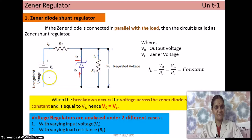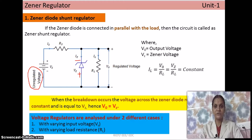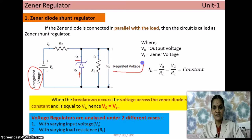Let's define the terms: VS is the source voltage, RS is the series resistance, IS is the current through the series resistance, VZ is the zener diode voltage, V0 is the output voltage, IZ is the diode current, IL is the load current, and RL is the load resistance. The input here is the unregulated voltage — a voltage with a lot of amplitude variations. We want to convert it into a constant DC voltage.